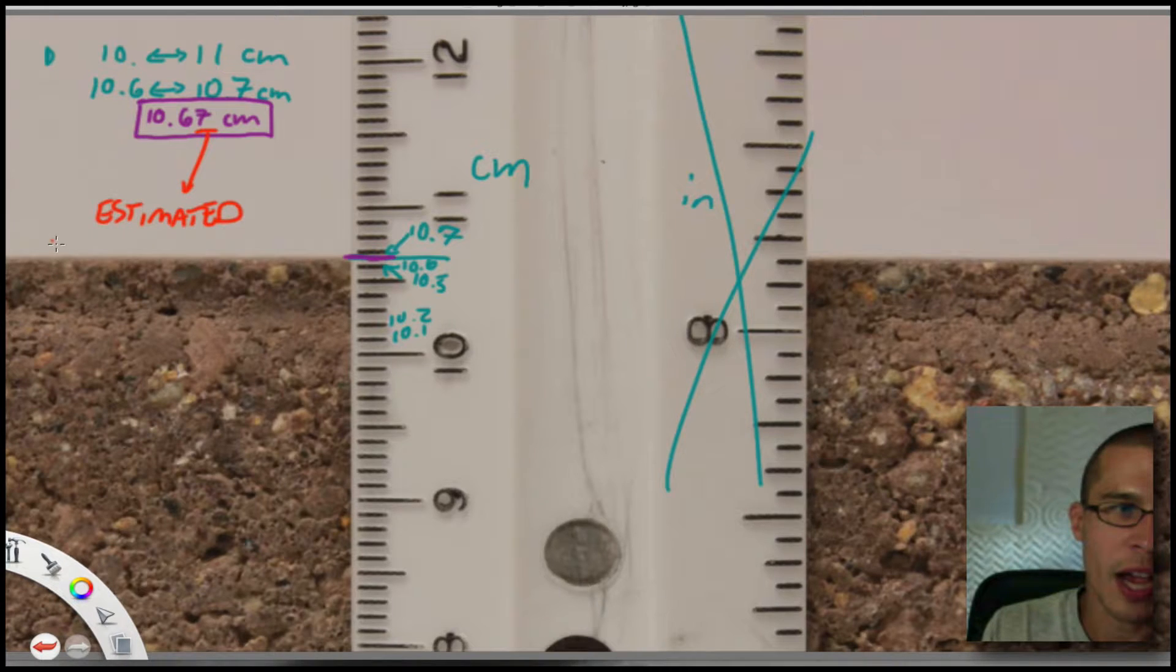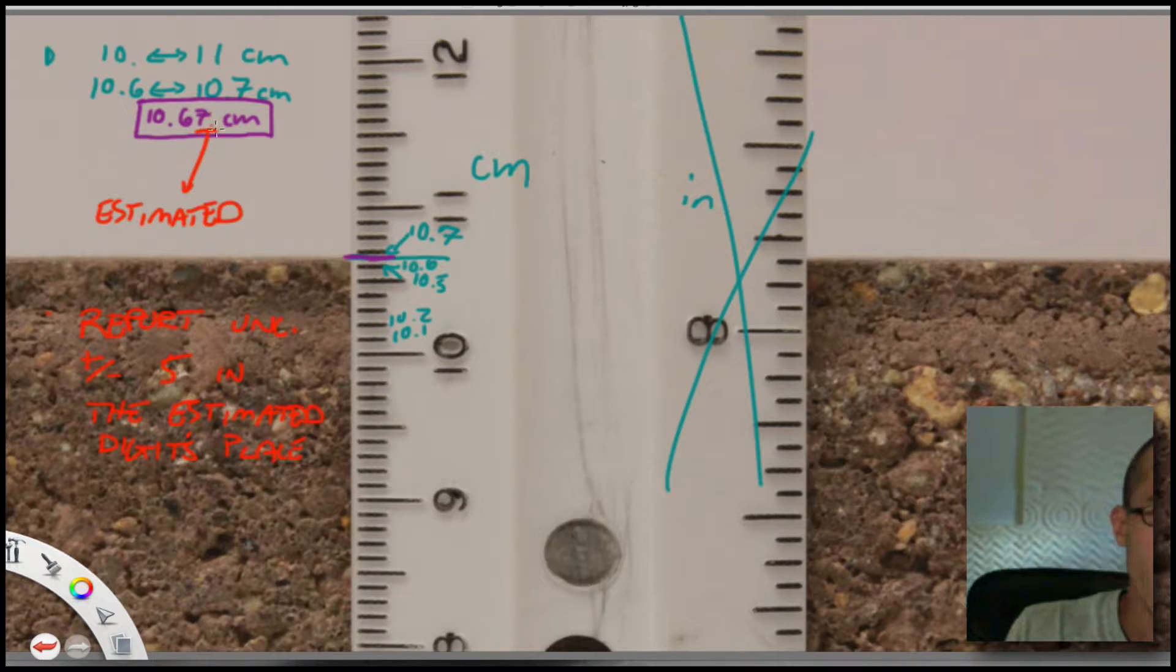So I'll say that one more time. I have to report, and I'll write it down, report my uncertainty plus or minus five in the last place, or in the estimated place, digit's place. So in this case, that means that I must say that this is plus or minus, this measurement right here is plus or minus 0.05 centimeters.